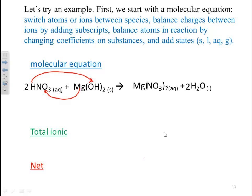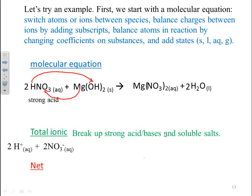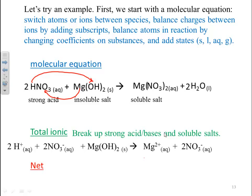Now we've got to write the total ionic. We break up strong acids, bases, and soluble salts, and everything else comes down as written. Nitric acid is a strong acid, so it breaks up 100% — you get 2 H⁺ and 2 nitrates. Magnesium hydroxide is an insoluble salt, so it comes down just like it's written. Magnesium nitrate is a soluble salt, so it breaks up into Mg²⁺ and 2 nitrates. Water is our solvent, so it comes down as written.